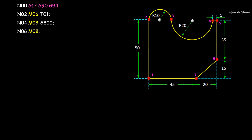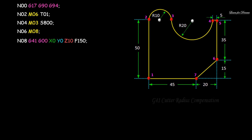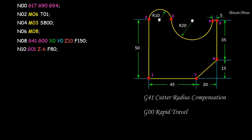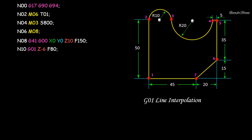N06: M08 — M08 is coolant on. Then N08: G41 G00 X0 Y0 Z10 F150 — G41 is cutter radius compensation (explained in detail in a previous video, link in the I button). G00 is rapid travel. N10: G01 Z-6 F80 — G01 is linear interpolation; for the drilling and cutting operation we have considered a depth of 5 mm.